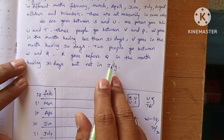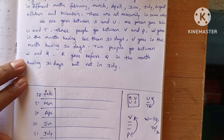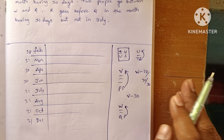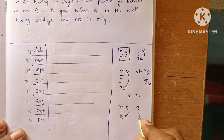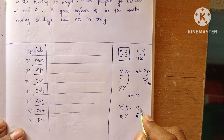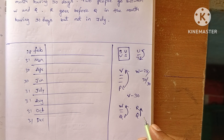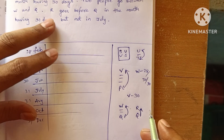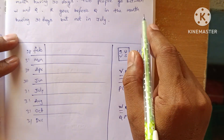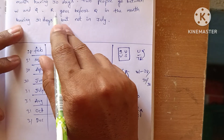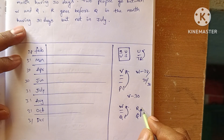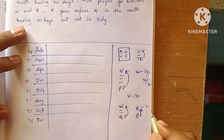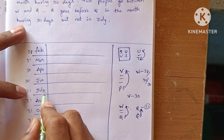R goes before Q. Also, R goes in a month having 31 days but not in July, so R does not go in July.